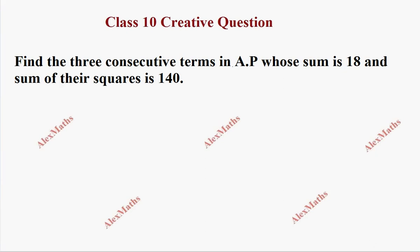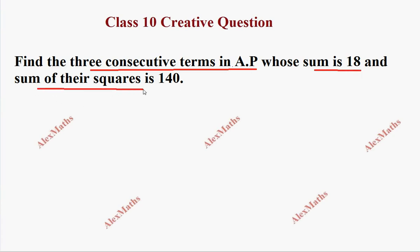Hi students, this is Alex. The question is about finding three consecutive terms in an AP where the sum of the terms is 18 and the sum of their squares is 140.